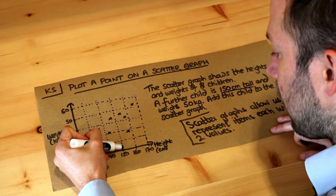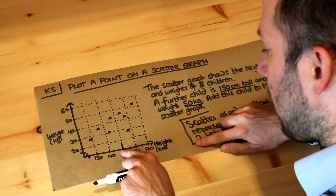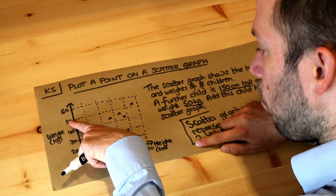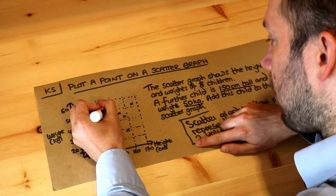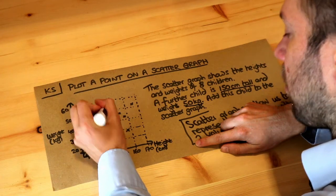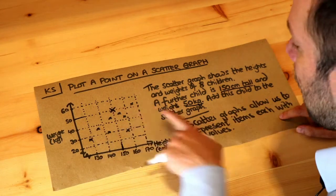And then it says they weigh 50 kilograms. That's their weight. So we go up to a weight of 50 kilograms. We go across there, we go up to that 50 mark, and we're going to put a big cross there. So you can see, look, height 150 and then the weight 50.